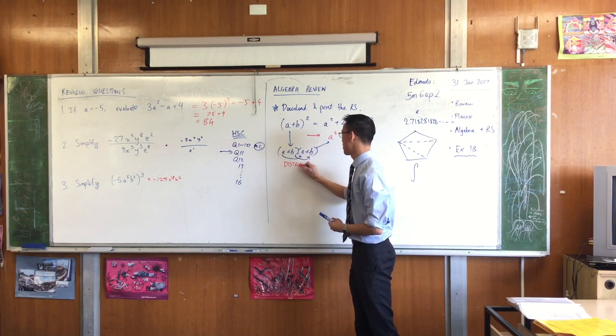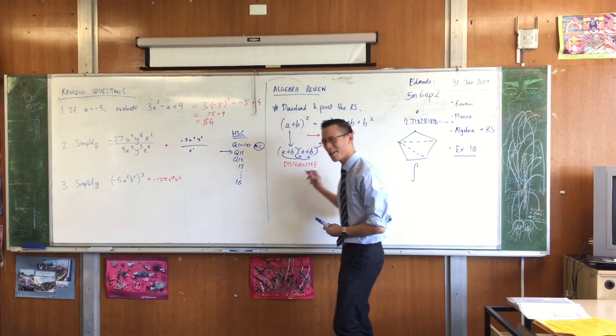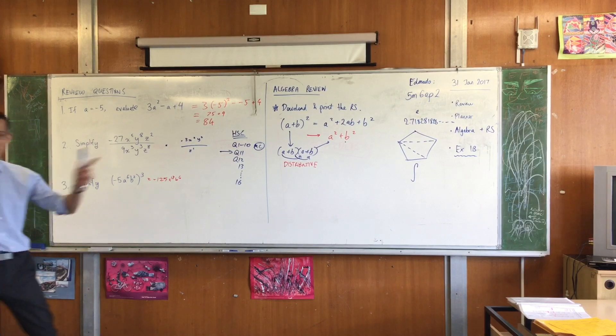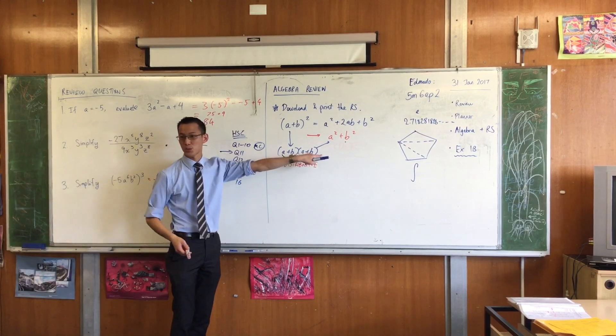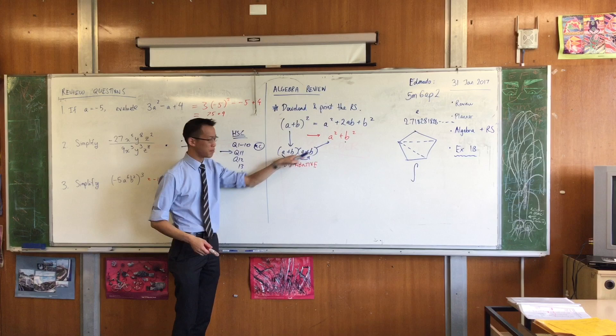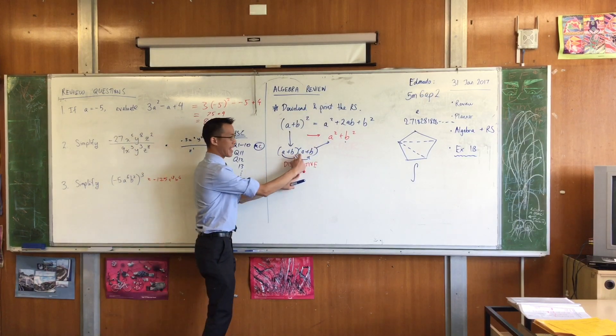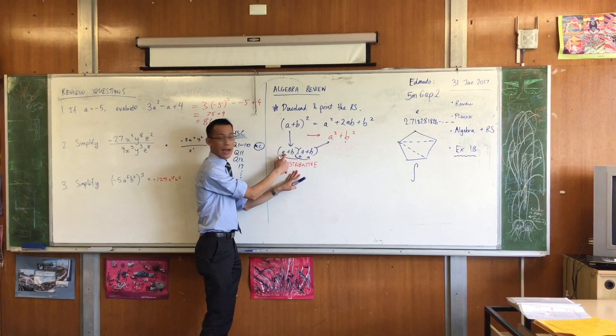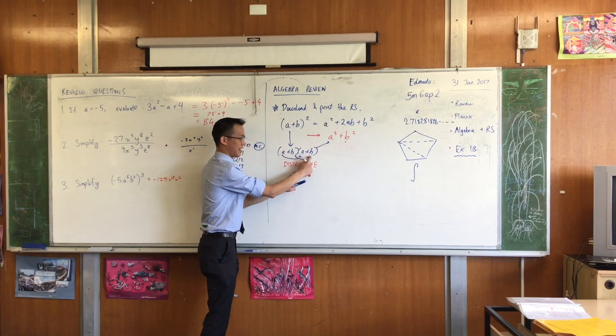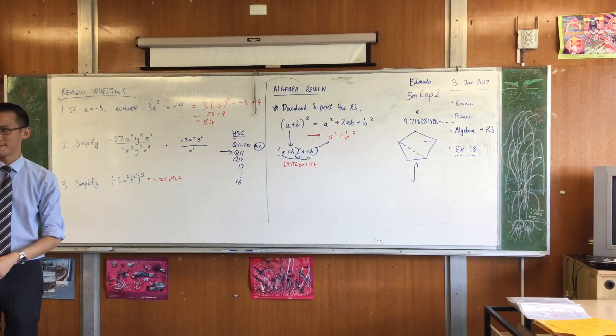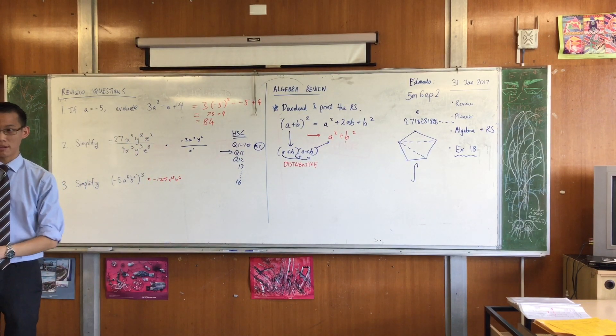I think the word we're looking for here. You might want to write this. Is the distributive law. Does that word ring a bell? The distributive law. When you take something and you multiply it across brackets, you don't just pick and choose. You distribute. So you're multiplying everything in here by A. And everything in here by B. Does that make sense? That's where those two ABs come from.